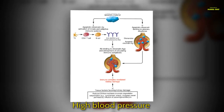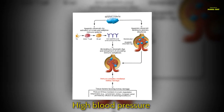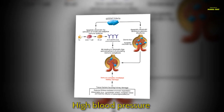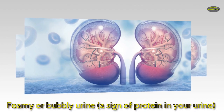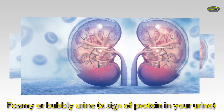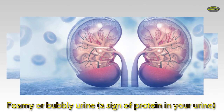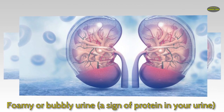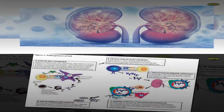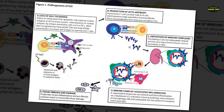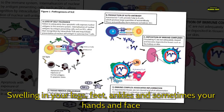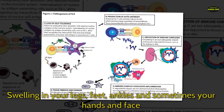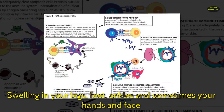Symptoms to watch for include high blood pressure, foamy or bubbly urine which is a sign of protein in your urine, and swelling in your legs, feet, ankles, and sometimes your hands and face.